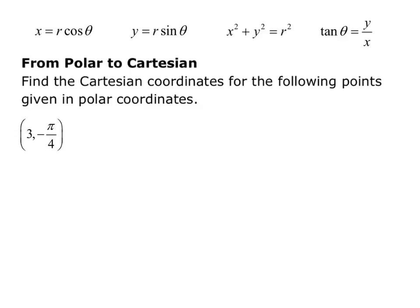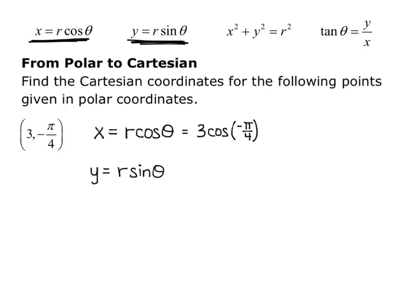From polar to Cartesian: we want to find the Cartesian coordinates for points given in polar coordinates. Our first point is (3, -π/4), so r is 3 and theta is -π/4. Using the identity x equals r cosine theta, that's 3 cosine of -π/4. And using y equals r sine theta, that gives us 3 sine of -π/4.